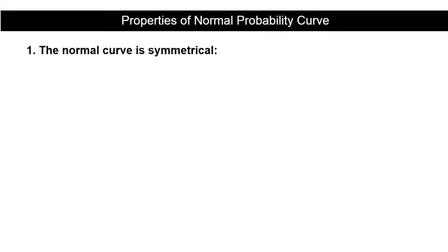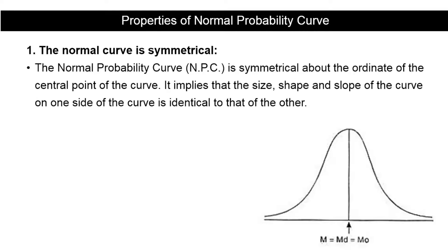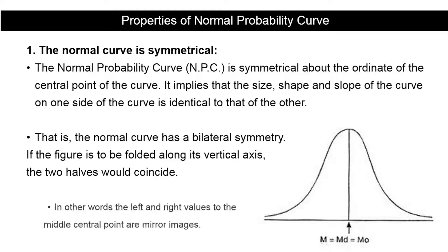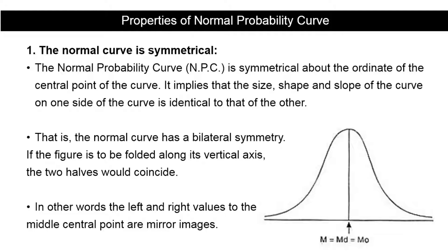The first property is that the normal curve is symmetrical. The normal probability curve is symmetrical about the ordinate of the central point of the curve. The size, shape, and slope of the curve on one side is identical to the other side — the normal curve has bilateral symmetry. If you fold a normal curve along its vertical axis, the two halves would coincide; the left and right values to the central point are mirror images of each other.